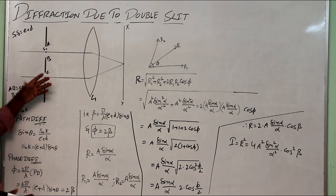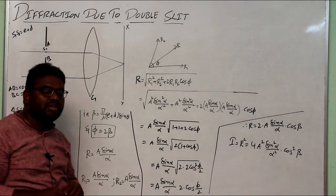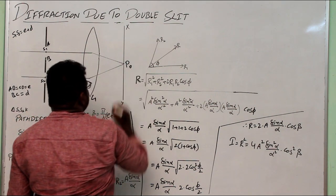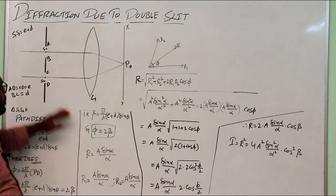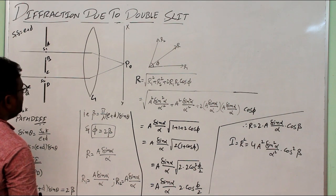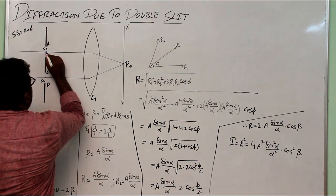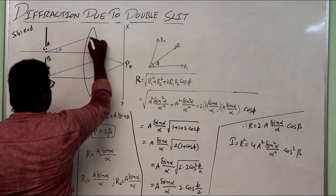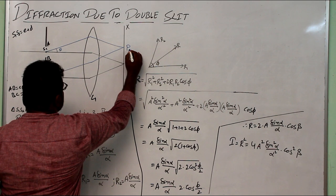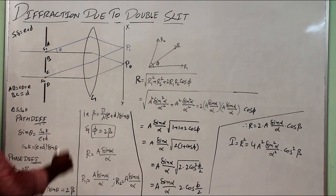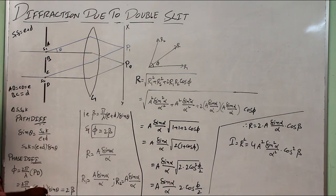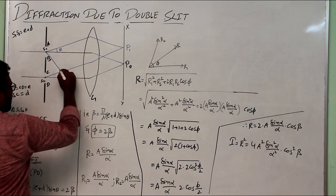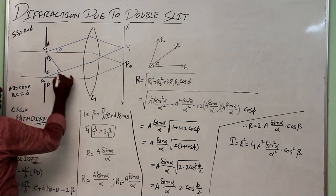When light is incident on the slits, rays passing straight through focus at the center of the screen at point P0, giving a bright fringe because they travel without deviation. When light diffracts at an angle theta, it focuses at another point P1 on the screen. Whether P1 is bright or dark depends on the path difference between the two light rays.